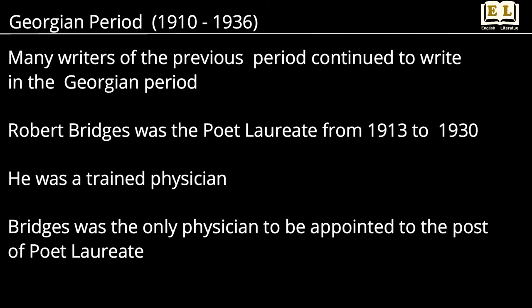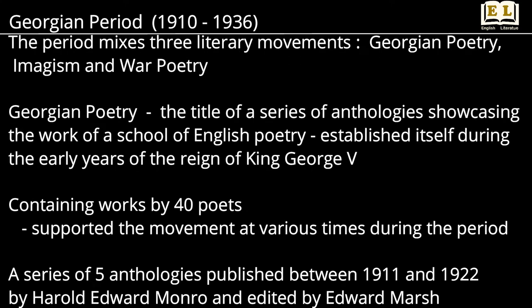Many writers of the previous period continued to write in the Georgian period. Robert Bridges was the Poet Laureate from 1913 to 1930. He was a trained physician and the only physician to be appointed to the post of Poet Laureate. The period mixes three literary movements: Georgian Poetry, Imagism, and War Poetry.